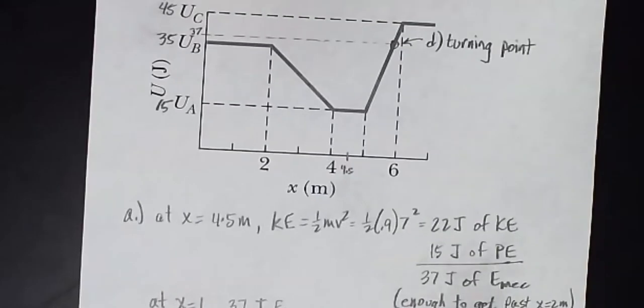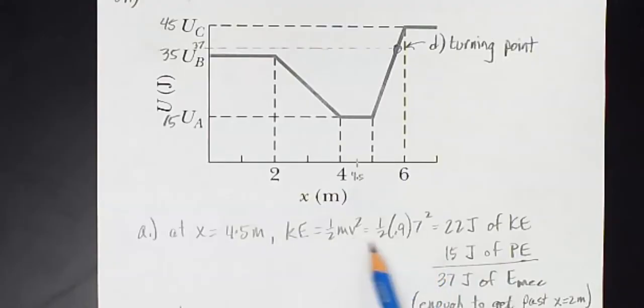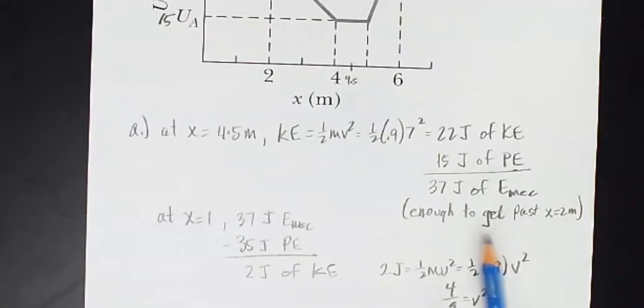We know it's moving at 7 meters per second, so we can figure out how much kinetic energy it has. Its mass is also given as 0.9, so I know it has 22 joules of kinetic energy, and according to the graph, at this position, it has 15 joules of potential energy. So that is a total mechanical energy of 37 joules.